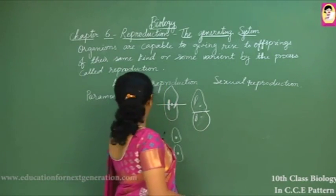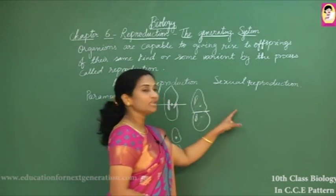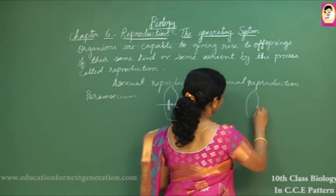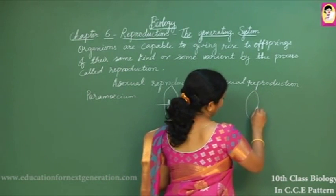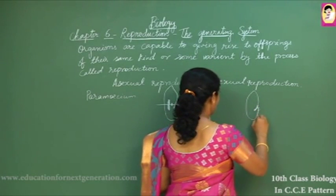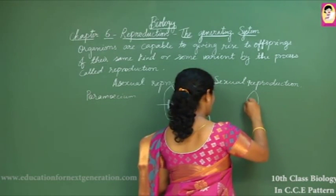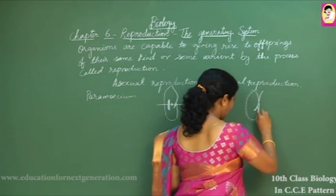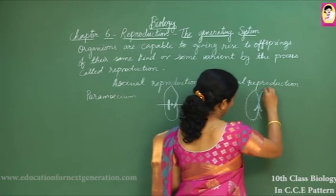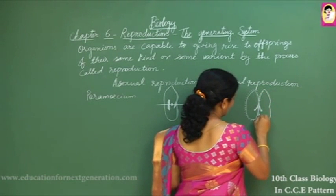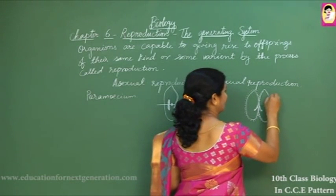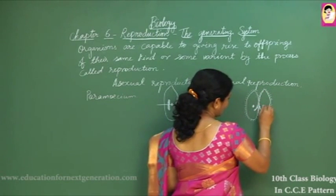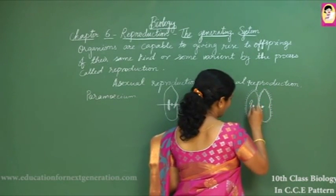At the same time, paramecium can go for sexual mode of reproduction when conditions are not favorable. In that case, two paramecia conjugate at the ventral groove sites where their oral cavities are present, and exchange of genetic material takes place.